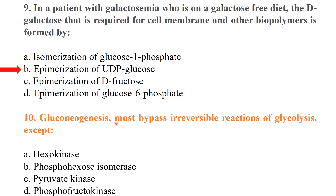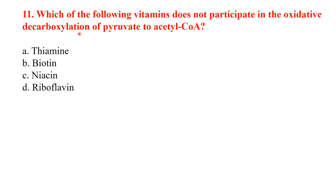Gluconeogenesis must bypass irreversible reactions of glycolysis except phosphohexose isomerase — that reaction is reversible. Which of the following vitamins does not participate in the oxidative decarboxylation of pyruvate to acetyl coenzyme A? The answer is biotin.